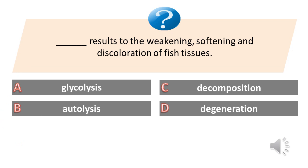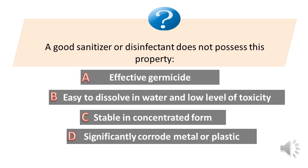What results in the weakening, softening and discoloration of fish tissues? A. Glycolysis. B. Autolysis. C. Decomposition. D. Degeneration. Answer is B. Autolysis. Autolysis plays an important role in the spoilage of fish.